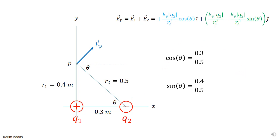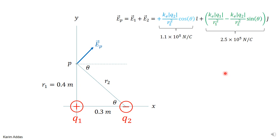Substituting all known values for q, k, and the distances, the x component is 1.1 × 10⁵ N/C and the y component works out to its corresponding value. As expected from the drawing, the total electric field has a positive x component and a positive y component. Note that the total electric field doesn't need to point radially inward or outward to any of the individual charges — only each individual field contribution must do that.